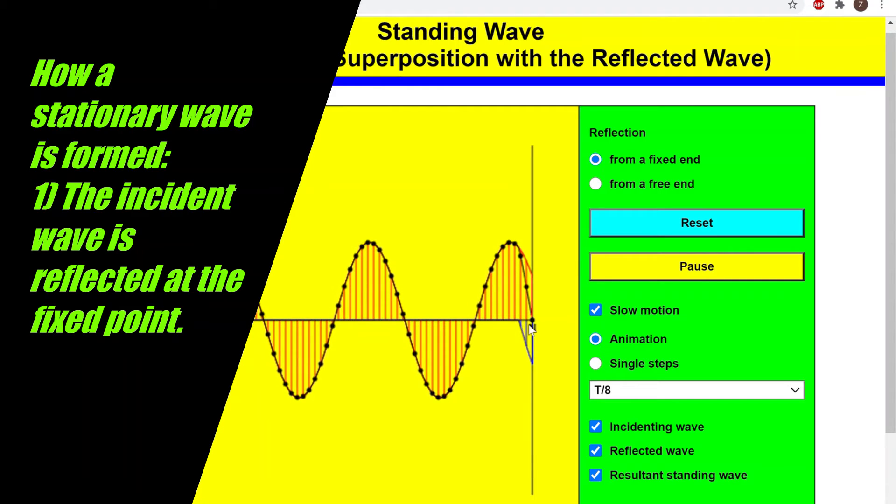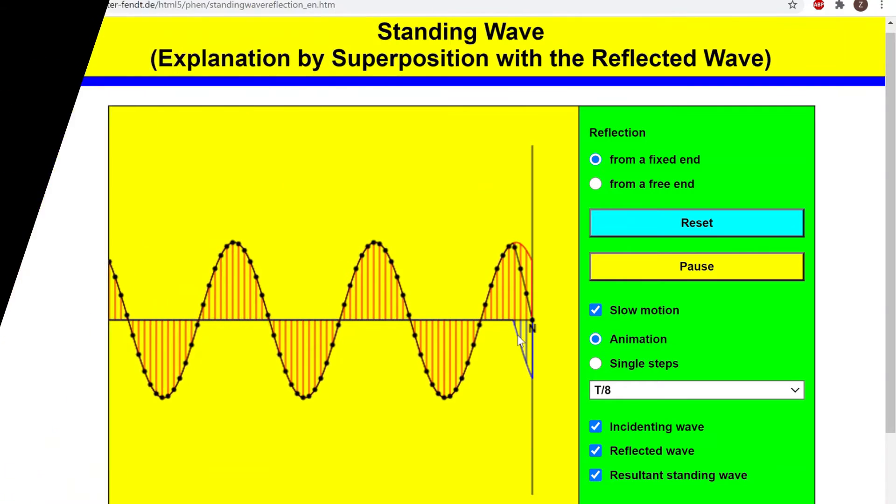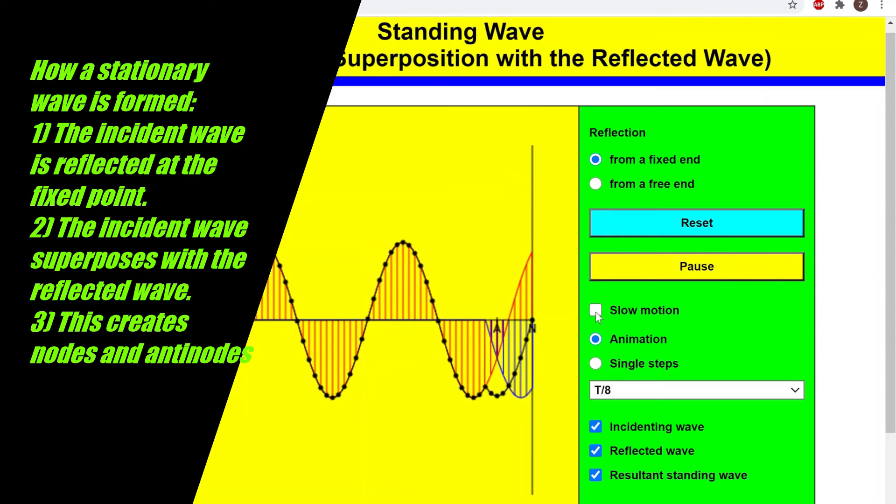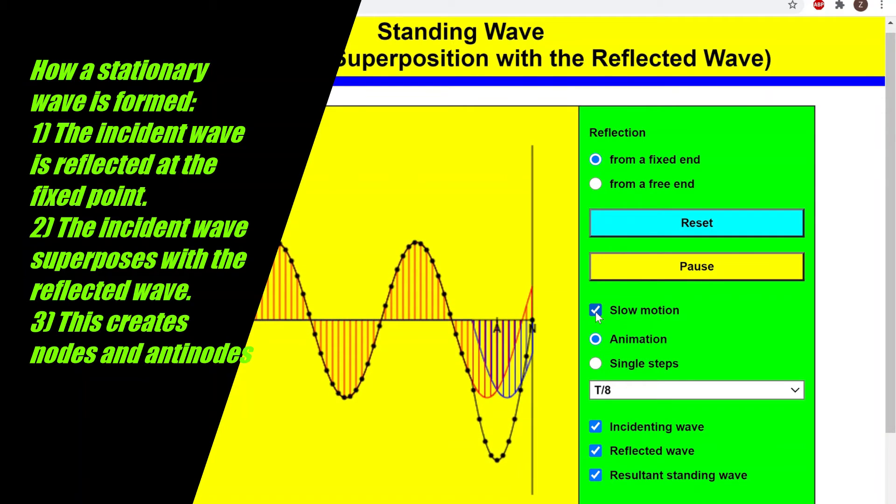Now when the incident wave is reflected, the incident wave is going to superpose with the incoming wave. We can see that just there. As I put this in slow motion, we can see that process of interference.